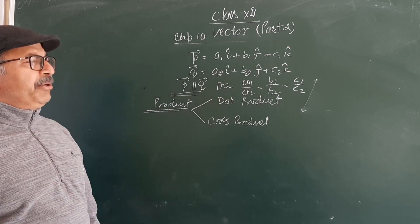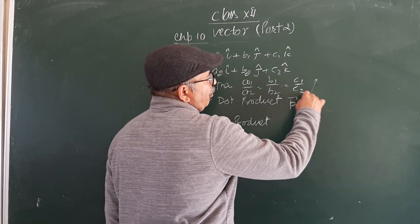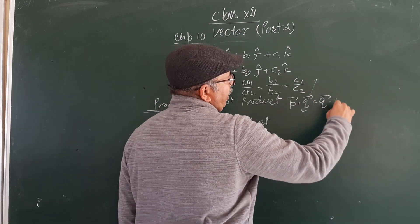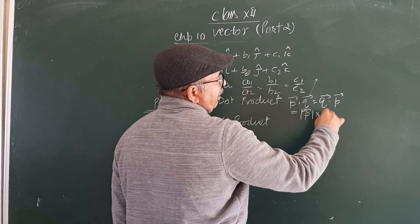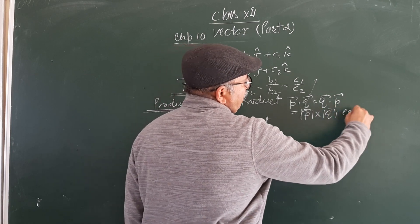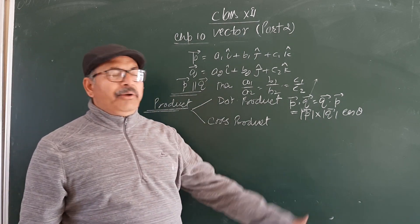Dot product: P dot Q = Q dot P equals modulus of P times modulus of Q into cos theta, where theta is the angle between P and Q.